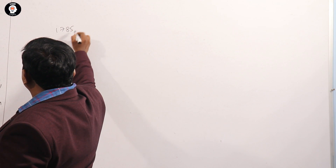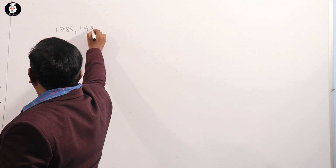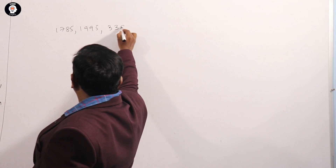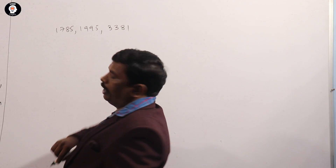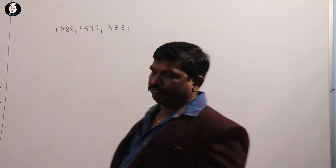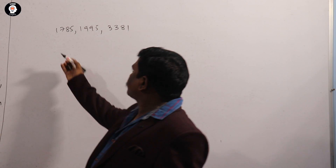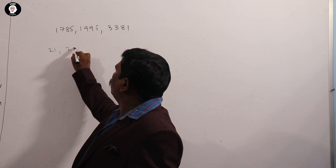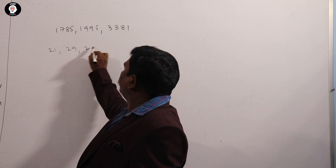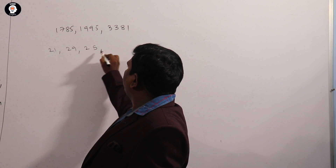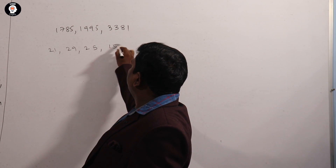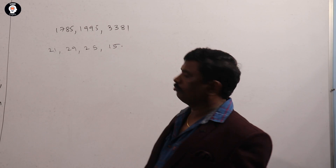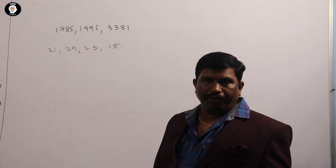Let's see this example: 1785, 1995, 3381. Options are 21, 29, 25, 50. Let's find the GCD using the minimum difference method.